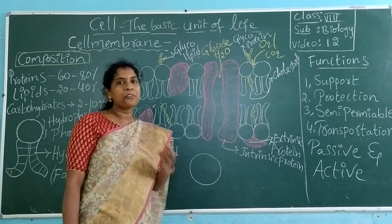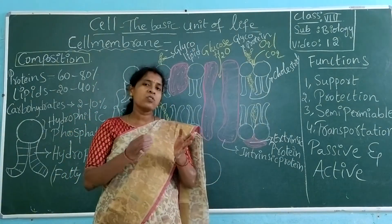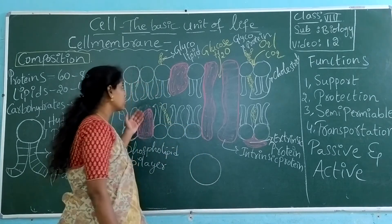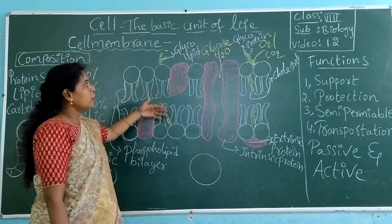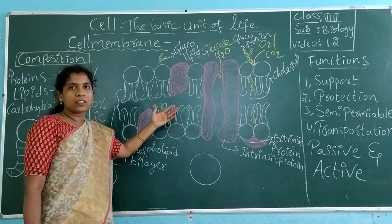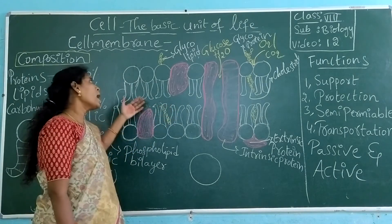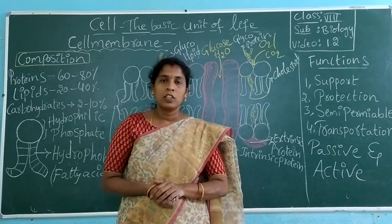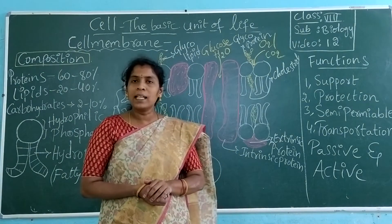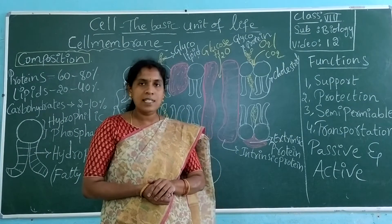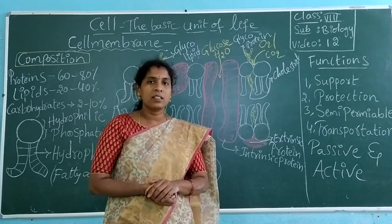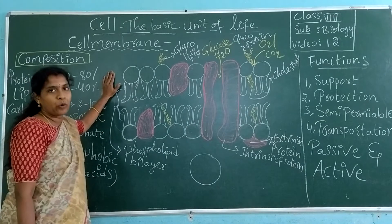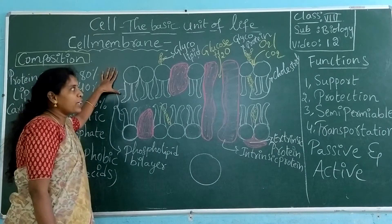Actually, the cell membrane is made up of three layers. Based on the arrangement of the structure of the cell membrane, it has been given different models. Now I am explaining with the fluid mosaic model. It is very popular, given by Nicholson and Jonathan Singer — these two scientists gave the fluid mosaic model of the cell membrane.